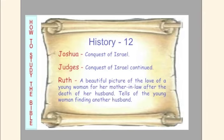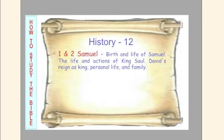Ruth is a beautiful picture of the love of a young woman for her mother-in-law after the death of her husband, and tells of the young woman finding another husband. First and Second Samuel cover the birth and life of Samuel, the life and actions of King Saul, David's reign as king, and his personal life and family.